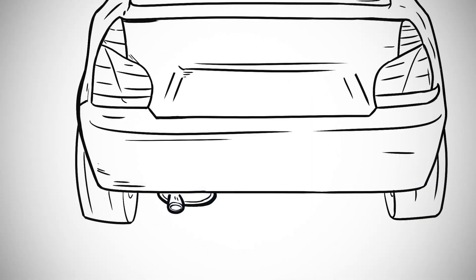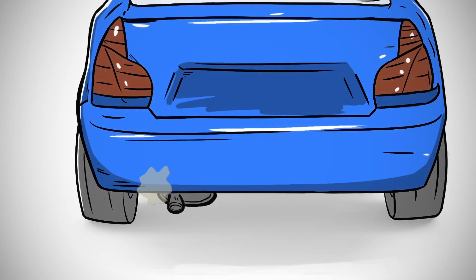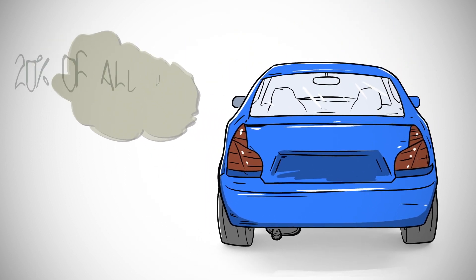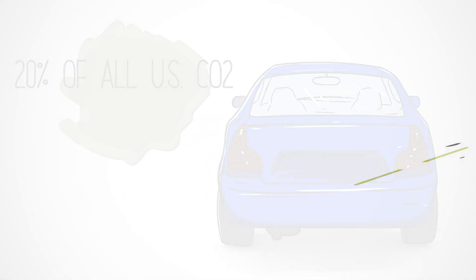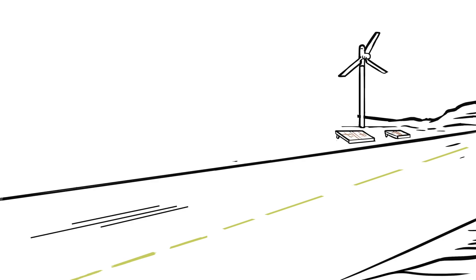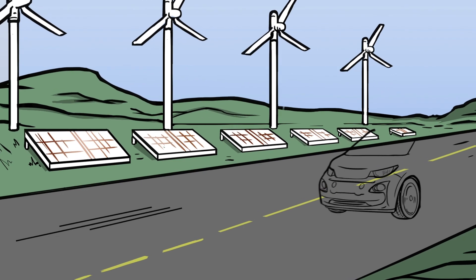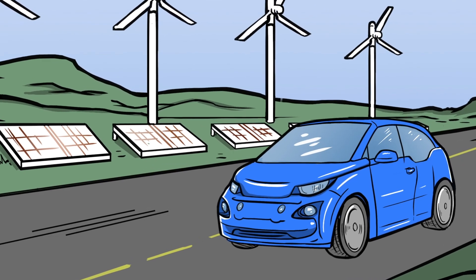While conventional gas-powered vehicles increase greenhouse gases by producing more than 19 pounds of carbon dioxide for every gallon of fuel they burn, electric vehicles produce no emissions at all, and when they're charged on a power grid utilizing renewable energy, a sustainable future becomes even more attainable.